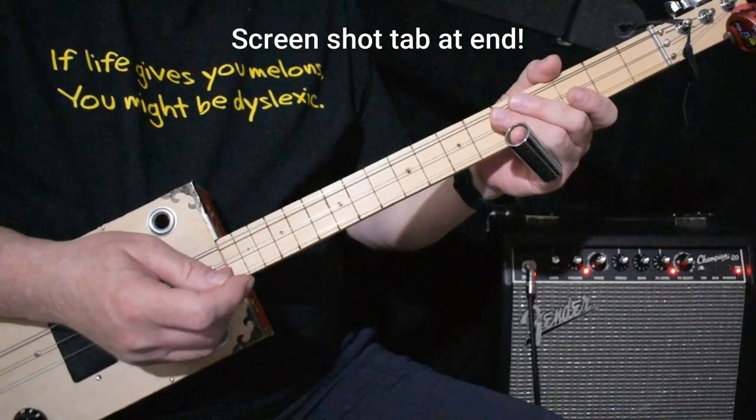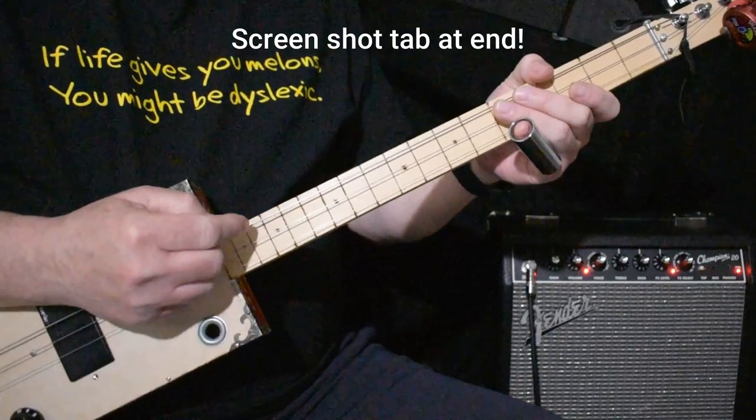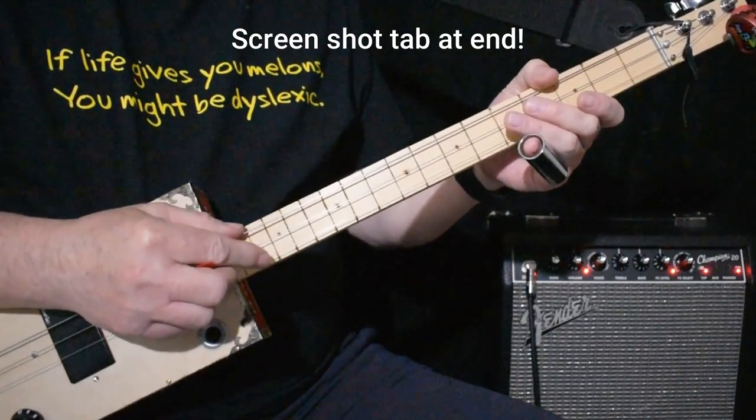Hi, today I'd like to show you how to play When the Levee Breaks by Led Zeppelin. I'm tuned to G, G, D, G. If you want to play along with the record, you want to tune F, C, F.